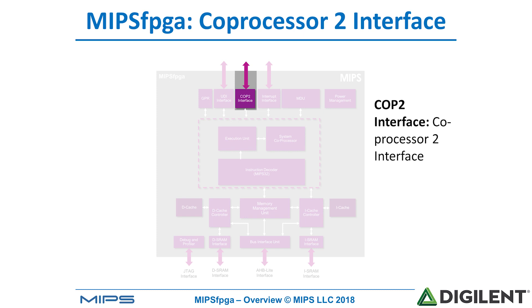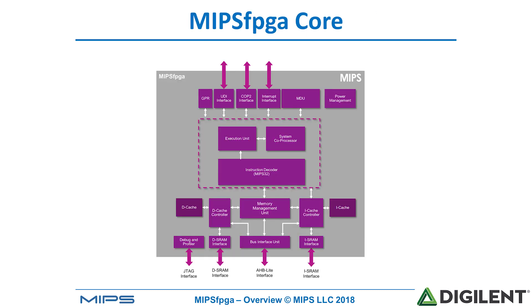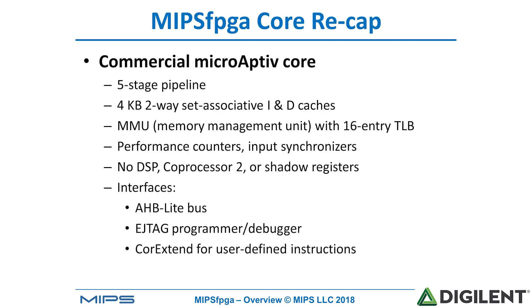MIPS FPGA also offers a coprocessor 2 interface. As a recap, MIPS FPGA has a five-stage pipeline, four kilobyte instruction and data caches, an MMU and TLB, performance counters, and input synchronizers. It does not have a DSP, coprocessor 2, or shadow registers. It includes interfaces: the HB light bus, EJTAG, and core extend for user-defined instructions. We'll talk about the first two interfaces in this session and the last one in a later session.